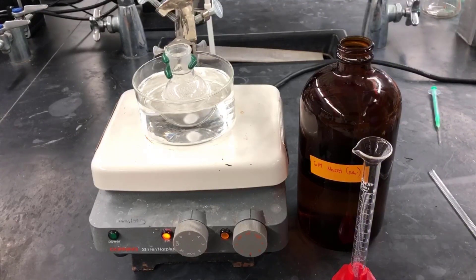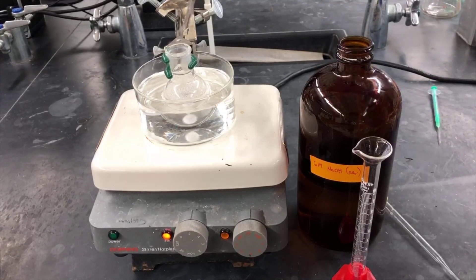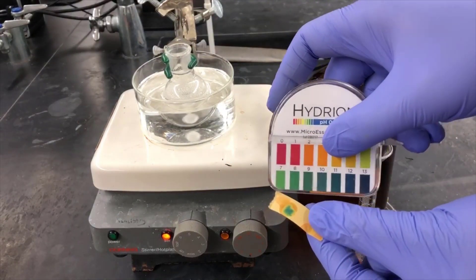I'll add another 1.5 milliliters of the hydroxide solution, and then test again with pH paper. Now the solution is sufficiently basic, with a pH of about 8 or 9.